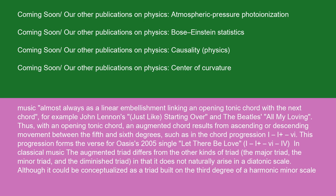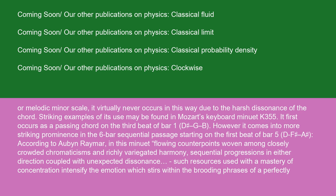In classical music, the augmented triad differs from the other kinds of triad — the major triad, the minor triad, and the diminished triad — in that it does not naturally arise in a diatonic scale, although it could be conceptualized as a triad built on the third degree of a harmonic minor scale or melodic minor scale. It virtually never occurs in this way due to the harsh dissonance of the chord.